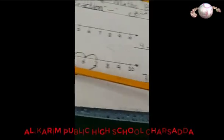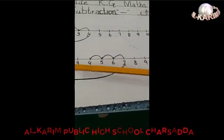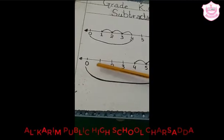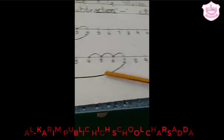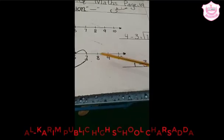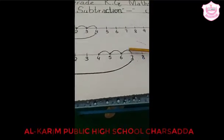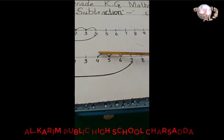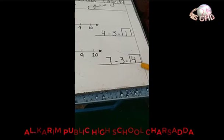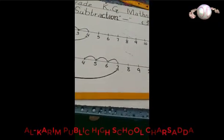Next question: seven minus three. On the number line, start from zero and mark up to seven. For minus, draw lines going to the left each time. From seven, jump back three — one, two, three. The answer is four. Seven minus three equals four. This is how we use the number line method for subtraction.